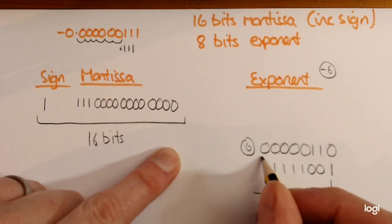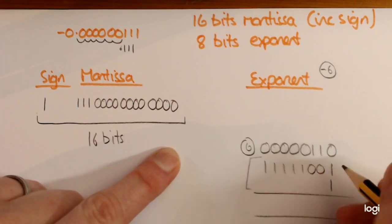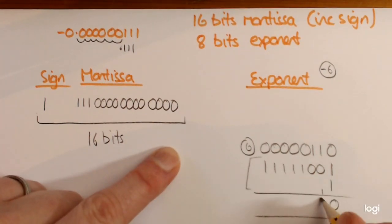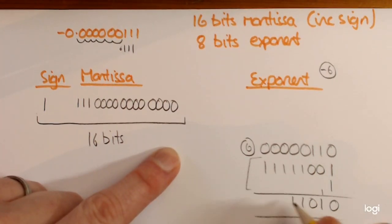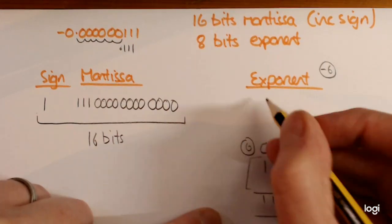So remember, it's just these 2 rows you're adding. 1 plus 1 is 1, well, carry the 1. So that's 1, 0, 1, 1, 1, 1, 1, 1. And that's your exponent.